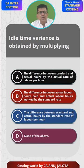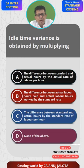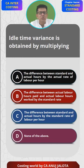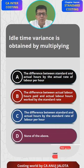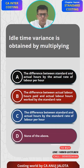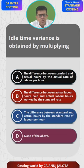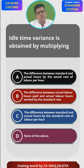Idle time variance is calculated as idle hours multiplied by standard wage rate — that is how we compute it. These exact words may not appear in the options A, B, C directly, but Option B demonstrates exactly that. The difference between actual labor hours paid and actual labor hours worked is nothing but idle hours.